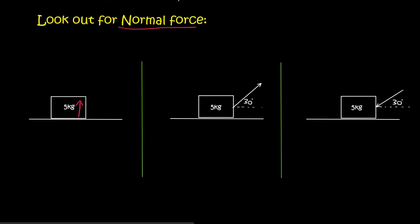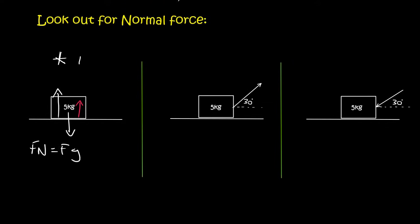Have a look at the following. In situation number one, we know how to calculate normal force because the only forces acting down would be gravity. That has to be balanced by the normal force, so the normal force equals gravity — 5 multiplied by 9.8, which is 49 newtons. Very easy, we've done that many times.